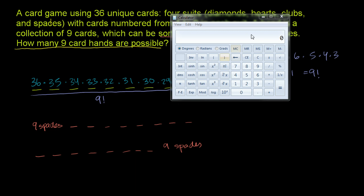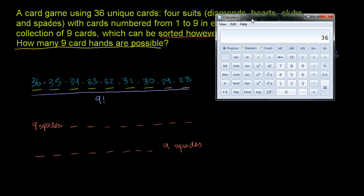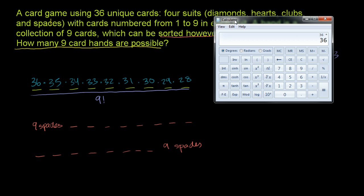We have 36×35×34×33×32×31×30×29×28 divided by, I could put a parenthesis, divided by parenthesis, 9×8×7×6×5×4×3×2×1. Hopefully the calculator can handle this.